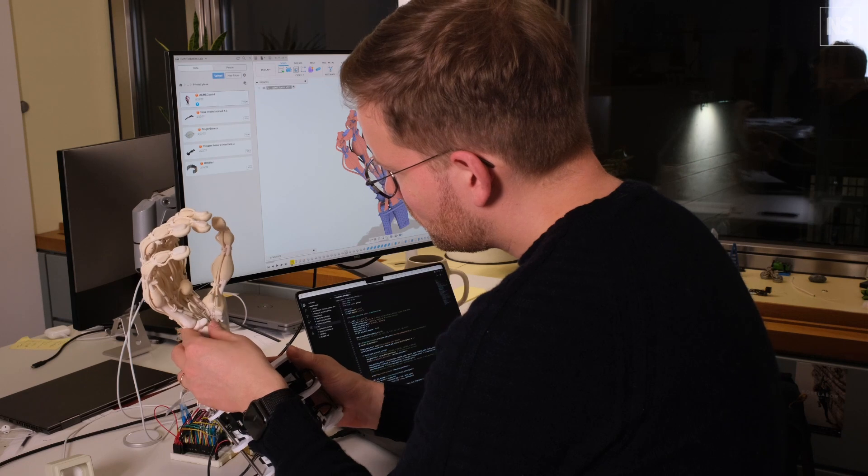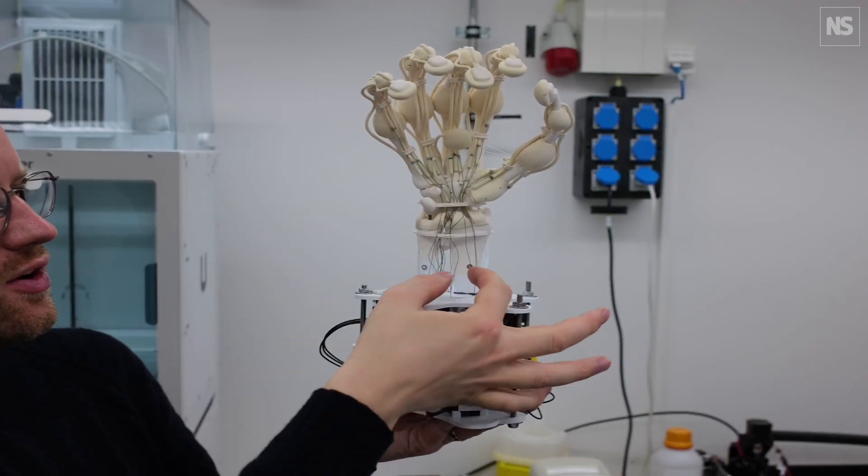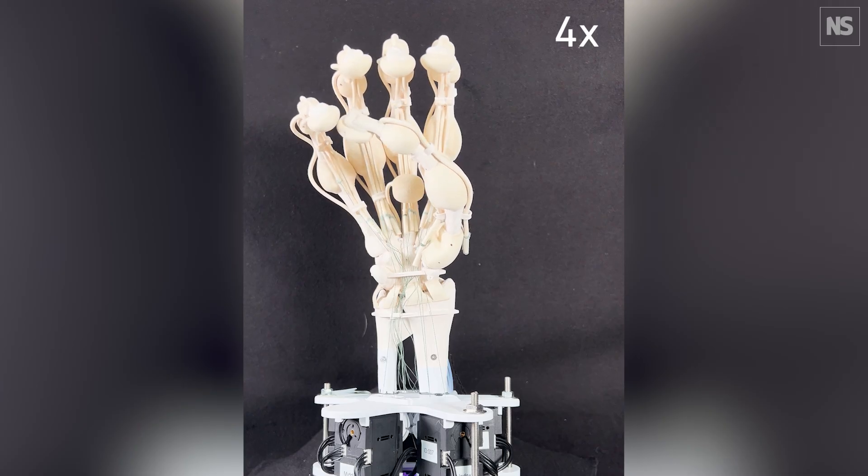These green lines interface the motors with the printed tendons. So when I pull on one of these, the fingers actually start to move.